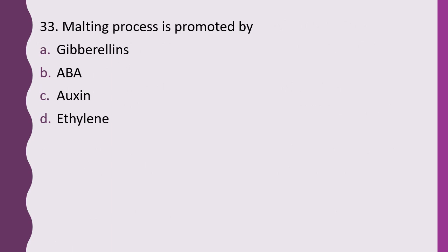Question 33. Malting process is promoted by: gibberellin, ABA, auxin, or ethylene. The correct answer is option A, gibberellins.